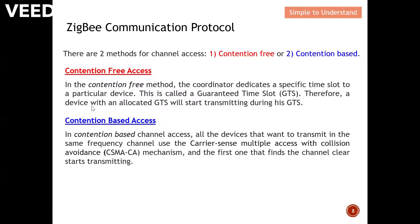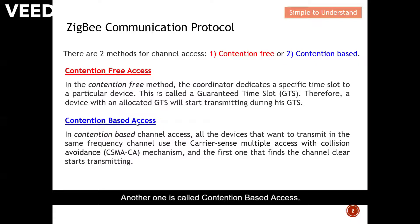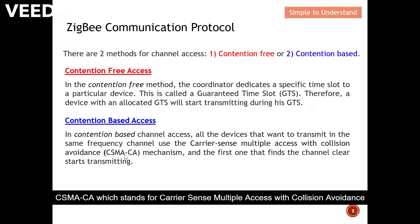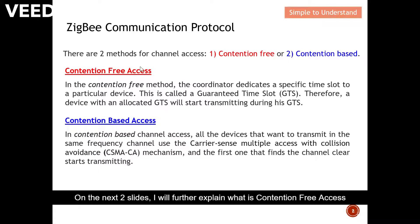The other method is called contention-based access. All devices that want to transmit on the same frequency channel use CSMA/CA, which stands for Carrier Sense Multiple Access with Collision Avoidance. The first device that finds the channel clear will start to transmit. In the next two slides I will further explain contention-free access and contention-based access.